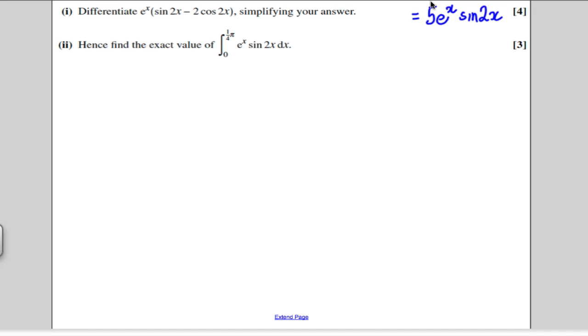Let's look at the second part. Again, this keyword that's coming up over and over again in these papers, hence, find the exact value of the following. So we want to integrate this. How can we use part 1 to do that? Well, we knew in part 1 that if we differentiated this, we'd get that. So if we integrate this, we would get this back.